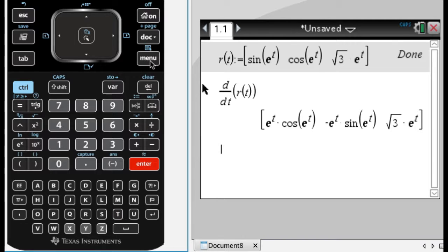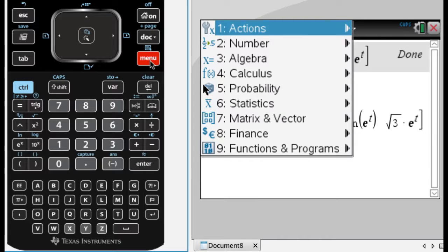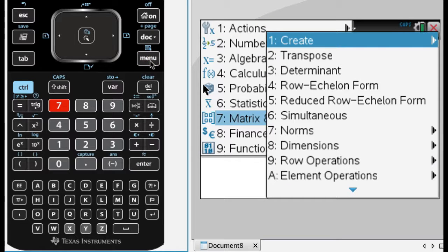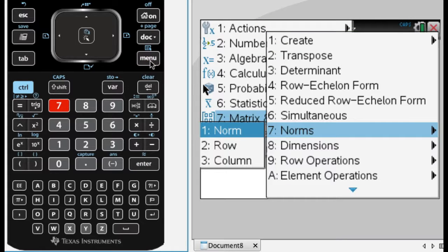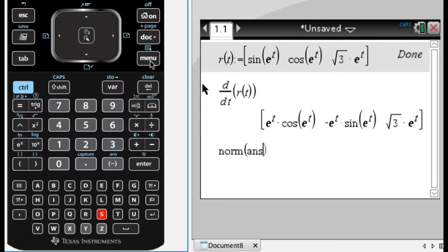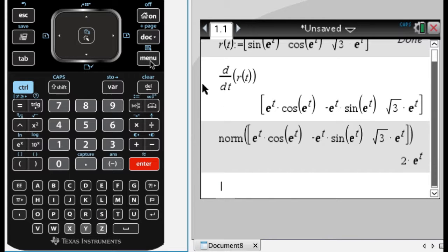And then what I need to do is I need to find the magnitude or the norm of that, so that's a menu, and then 7, and 7, so menu, matrix, and then norm, and then enter, and I'll do that for the answer to get this. So I have that, so that's a norm.